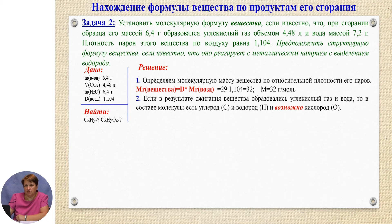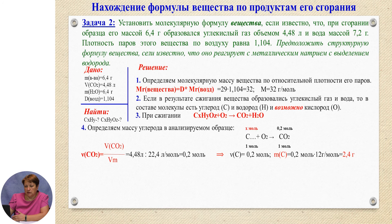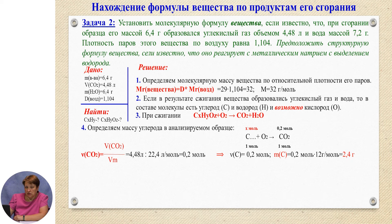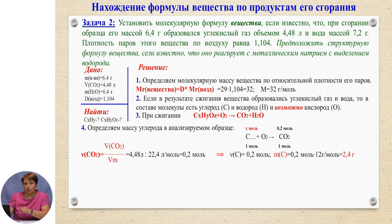First, we determine the molar mass from the relative density: M = D(air) × M(air) = 1.004 × 29 ≈ 32 g/mol. Then we find the mass of carbon in the analyzed sample. Since C + O₂ → CO₂, the ratio ν(C) : ν(CO₂) = 1 : 1, so ν(C) = ν(CO₂). We calculate ν(CO₂) = 4.48 / 22.4 = 0.2 mol, so the mass of carbon is m(C) = 0.2 × 12 = 2.4 g.